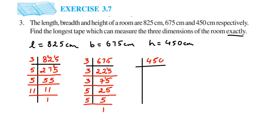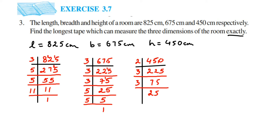Now for 450 — it ends in 0, so it goes in the 2 table: 450 ÷ 2 = 225. Then 225 is the same as what we just calculated, so we can copy directly: 225 = 3 × 3 × 3 × 5 × 5. I'm using a shortcut method — it's like division but written in a shorter way. So 450 = 2 × 3 × 3 × 3 × 5 × 5.